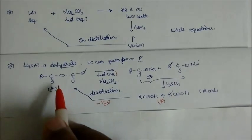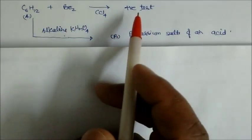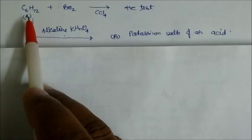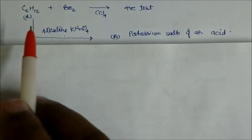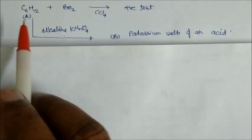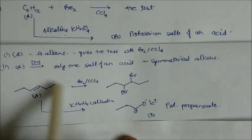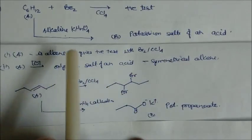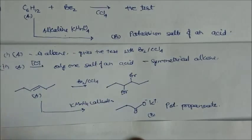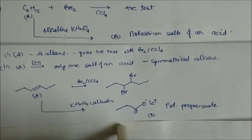Now, hydrocarbon A is C₆H₁₂. In presence of Br₂/CCl₄ it gives a positive test — this means it is an unsaturated compound. In presence of alkaline KMnO₄ it gives potassium salts of an acid B. So the hydrocarbon must be an alkene. Since oxidation gives only one salt of one acid (potassium propanoate, two moles), and carbon count is six, the double bond must be at the third carbon. The reaction with Br₂/CCl₄ gives dibromo addition, and with KMnO₄ gives only potassium propanoate — so this is a symmetrical alkene: hex-3-ene.